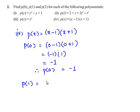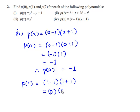The value of p of 1 is found by substituting 1 in the place of x: we get 1 minus 1 multiplied by 1 plus 1, which is 0 multiplied by 2. 0 multiplied by 2 is 0. Therefore, p of 1 is equal to 0.